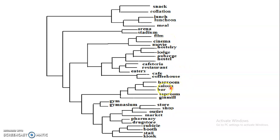Similarly, bathroom, saloon, and bar are the same type of data objects. Now how can we relate those objects? In real life, if we go to the movies, there is a high probability we also go to a restaurant. So we can combine snack, lunch, or restaurant with film. Likewise, if you go to a gymnasium, you will likely use the bathroom, saloon, and bar. So we can merge these two groups, and this is how we find hierarchy between data objects.